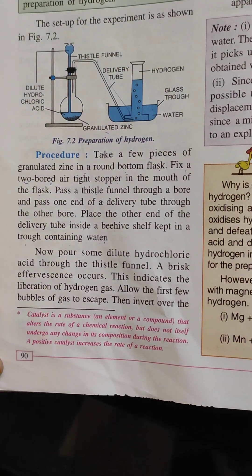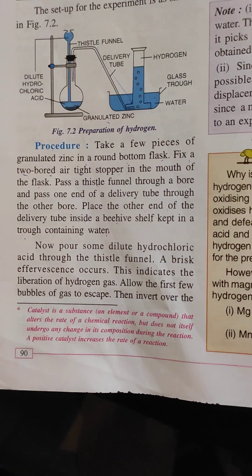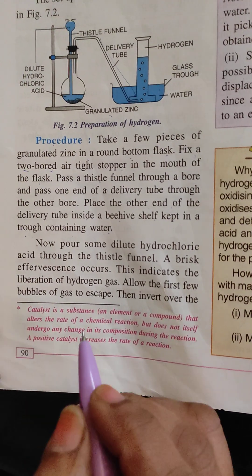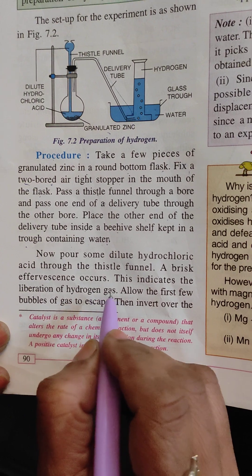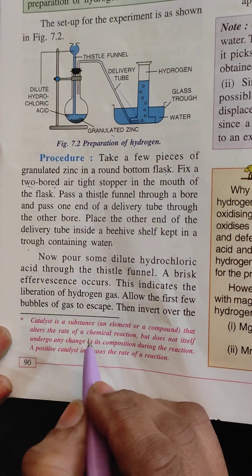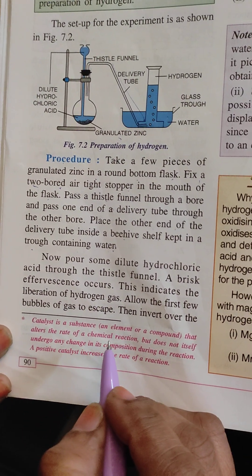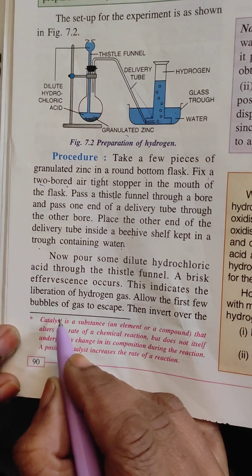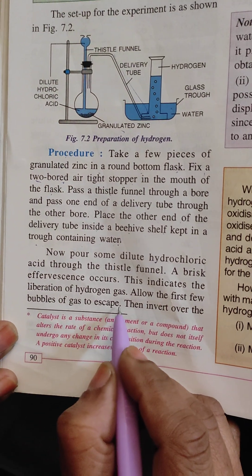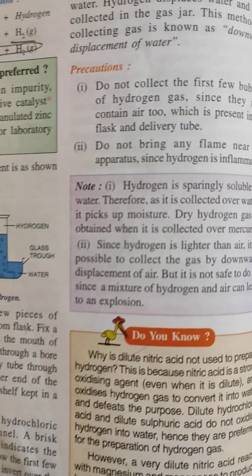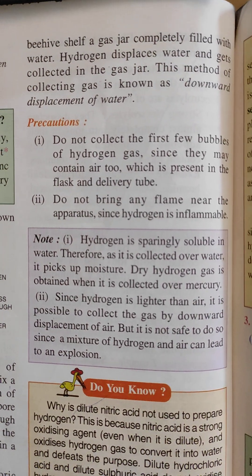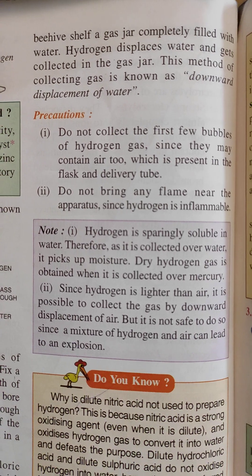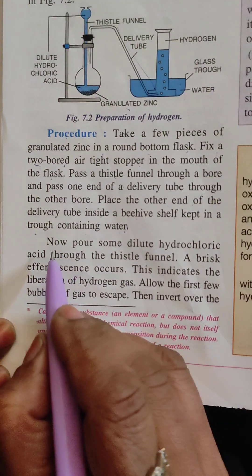Now pour some dilute hydrochloric acid through the thistle funnel. A brisk effervescence occurs. This indicates the liberation of hydrogen gas. Allow the first few bubbles of gas to escape. Then invert over the beehive shelf gas jar completely filled with water. Let me explain this much only.